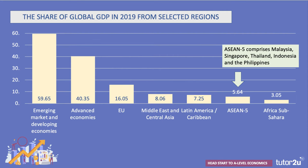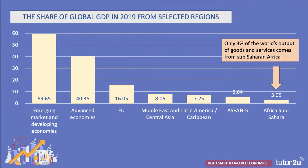Taking another look at the share of global GDP: ASEAN 5 is an economic community comprising the top five ASEAN countries — the Association of Southeast Asian Nations — specifically Malaysia, Singapore, Thailand, Indonesia, and the Philippines. They account for nearly 6% of the world economy. By contrast, if we think about the whole of sub-Saharan Africa — all the many countries in that part of the continent — only 3% of the world's output of goods and services comes from sub-Saharan Africa.